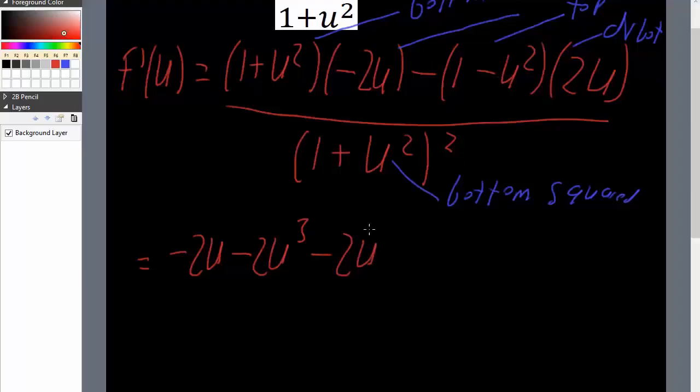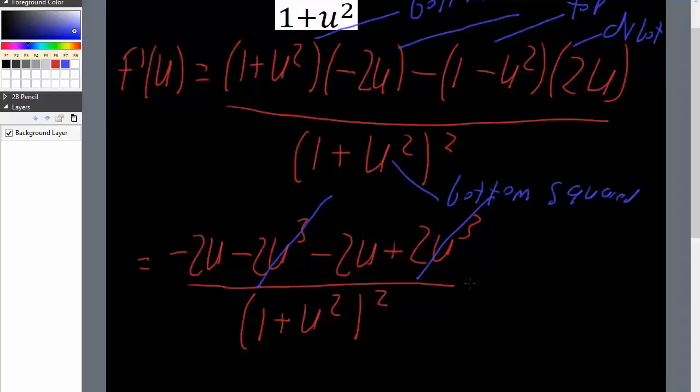Divided by the bottom squared, so 1 plus u squared squared. Now we cancel out some terms, so this term will cancel out with this, and we will finally be left off with the derivative of f of u.